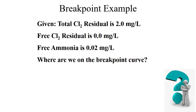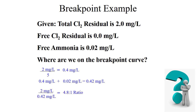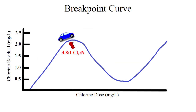In this example, the total chlorine residual is 2 mg/L, the free chlorine residual is 0, and the free ammonia is 0.02 mg/L. Since we have free ammonia and no free chlorine, we know we are to the left of the 5-to-1 ratio. As in the previous problem, the first step is to determine the ammonia dose at a 5-to-1 ratio: we divide 2 mg/L by 5 and get 0.4 mg/L. Then we add the free ammonia concentration of 0.02 to get a total ammonia feed rate of 0.42 mg/L. Next, we divide the chlorine residual of 2 mg/L by the ammonia feed rate of 0.42 mg/L to get a chlorine-to-ammonia-as-nitrogen ratio of 4.8-to-1. A 4.8-to-1 ratio is a good ratio for a plant to operate at since it minimizes the amount of free ammonia entering the distribution system.